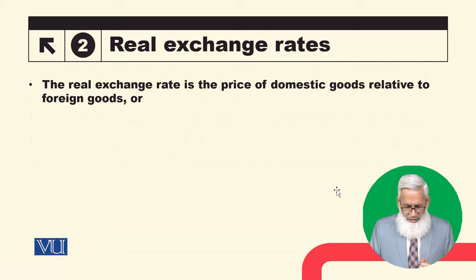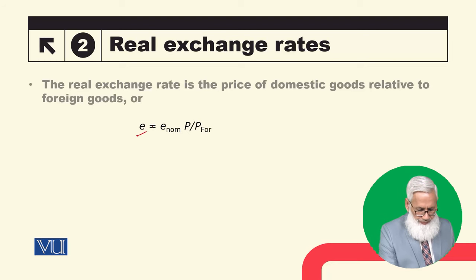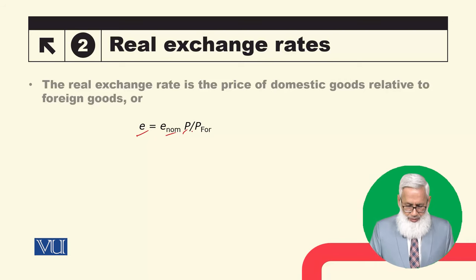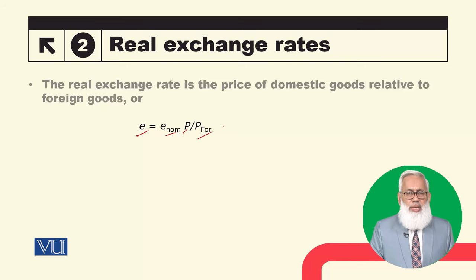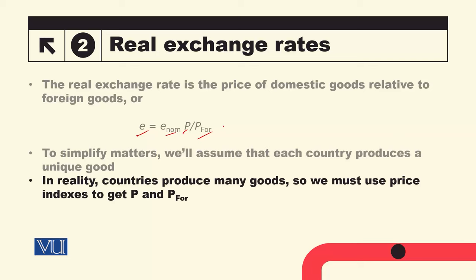The real exchange rate is the price of domestic goods relative to foreign goods. E is the real exchange rate, which equals the nominal exchange rate multiplied by P — the price of domestic goods — divided by P* — the price of foreign goods. In reality, countries produce many goods, so we must use price indexes to calculate P and P*.